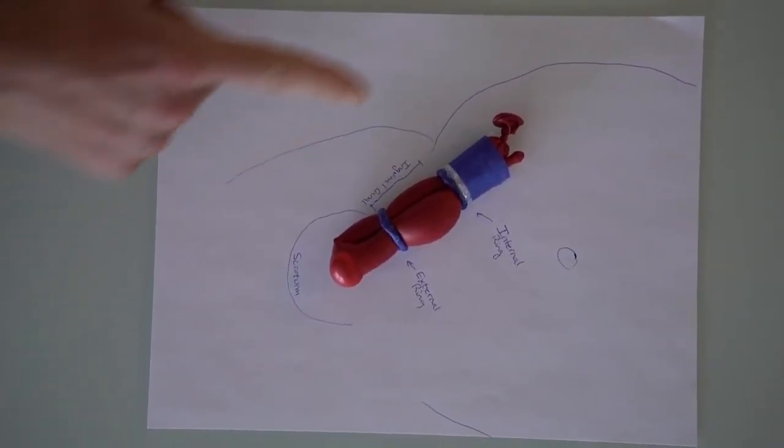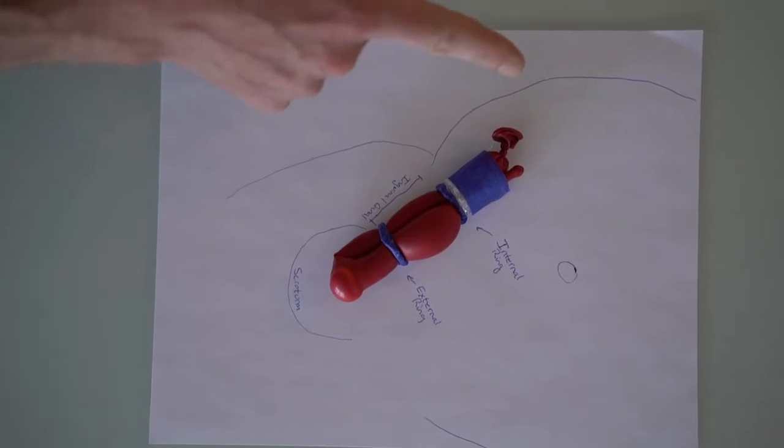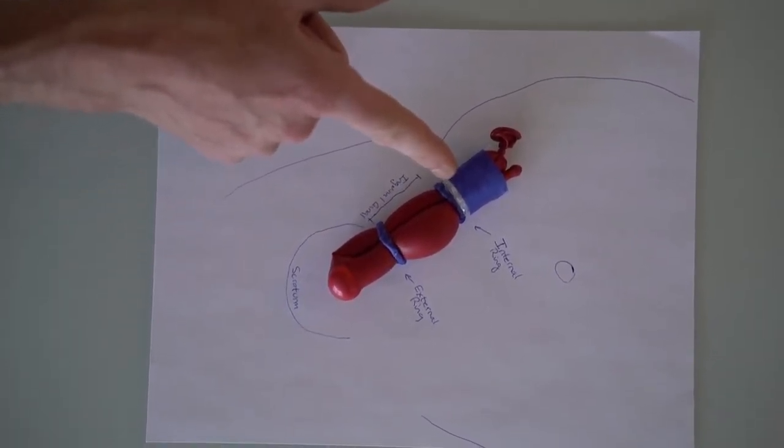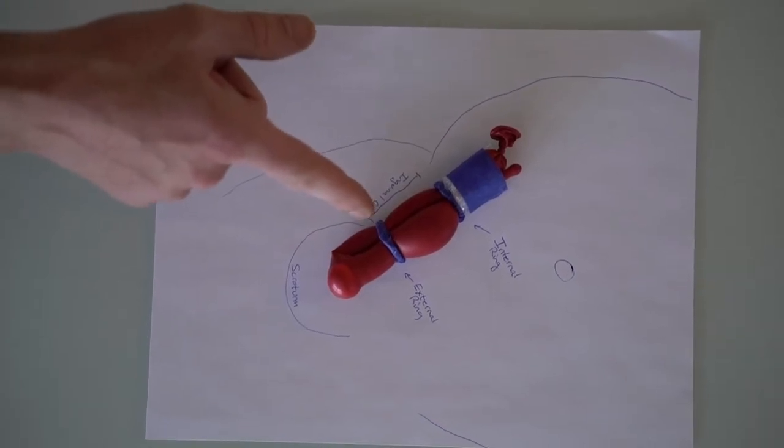So I've made a model here with a balloon representing the intestines. Here we have the internal inguinal ring and the external ring.